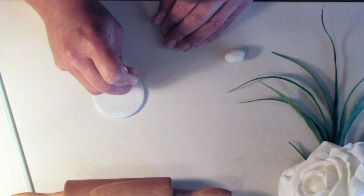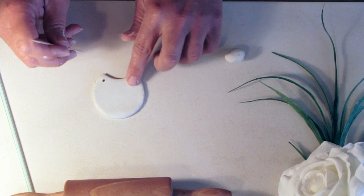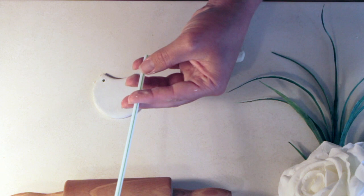You can obviously use something thicker than a cocktail skewer if you want a bigger hole, but in this case I want something quite small, not as thin as the cocktail stick but a little thicker, just a nice delicate hole there.